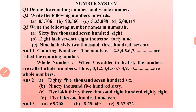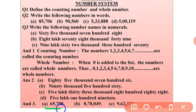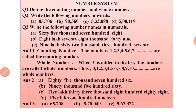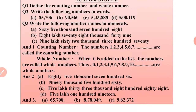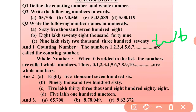Question 3: Write the following number names as numerals. For example, sixty-five thousand seven hundred eight is written as 65708. Similarly, eight lakh seventy-eight thousand forty-nine is 878049. And nine lakh sixty-two thousand three hundred seventy-two is 962372. In this way you can solve these questions.